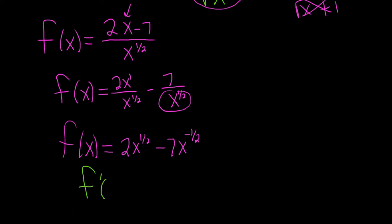So f'(x). Let's see, we'll bring down the 1/2. So 1/2 times 2 is just going to be 1. So I'll write it though, 1/2 times 2, x to the, let's see, 1/2 minus 1 is negative 1/2.